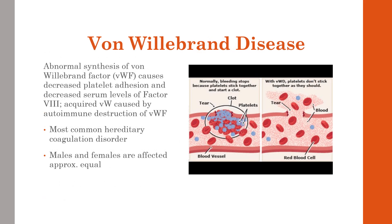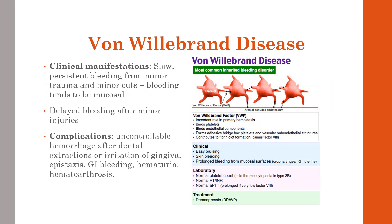Von Willebrand disease is a blood disorder in which the blood does not clot properly because von Willebrand factor is not produced adequately, and there is a decreased amount of factor VIII, which helps platelets stick together during the clotting process.